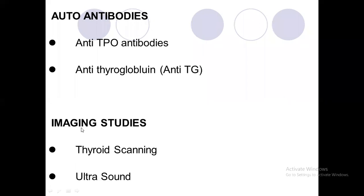Antibodies should also be advised because they help differentiate primary from secondary hypothyroidism. If anti-TPO antibodies and anti-thyroglobulin antibodies are present, that shows the patient has a primary problem in the thyroid gland, and there is no need for further investigations like MRI or CT scan.